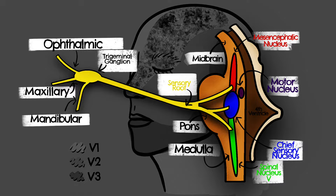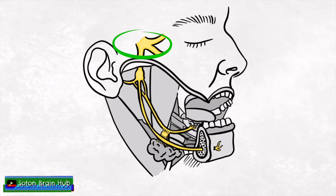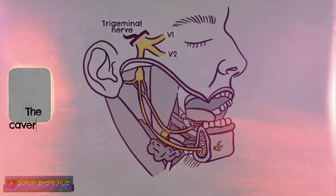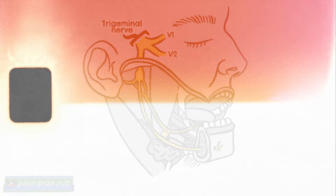From the ganglion, the three major divisions of the trigeminal nerve emerge anteriorly and inferiorly, with the ophthalmic and maxillary divisions, also known as V1 and V2, passing anteriorly to enter the cavernous sinus, and the mandibular division, also known as V3, descending into the foramen ovale.